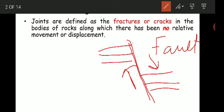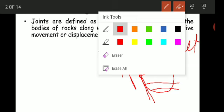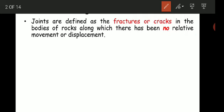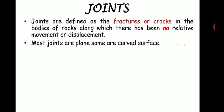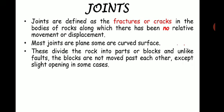In joints, there is no displacement of the blocks — only the formation of cracks. Joints are cracks or fractures in the bodies of rocks along which there has been no relative displacement; if there is displacement it is called a fault. Most joints are planar and some are curved surfaces. Unlike faults where blocks move past each other, in joints only the crack is formed, with at most a slight opening in some cases.